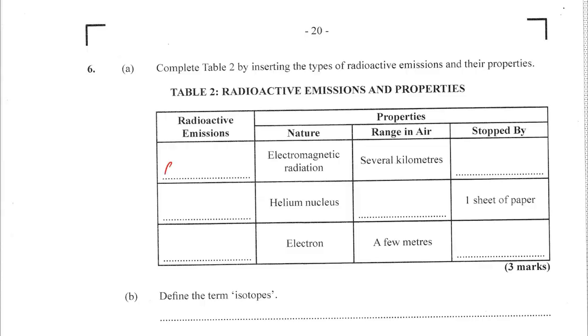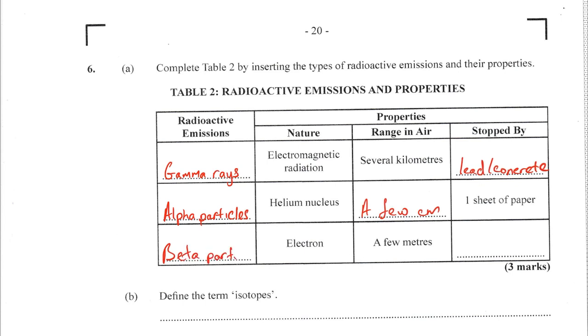Question 6A: complete the table by inserting the type of radioactive emission and their properties. Gamma rays can be stopped by lead or concrete. Alpha rays have a range of a few centimeters of air. Beta rays can be stopped by aluminum foil or a few centimeters of water.